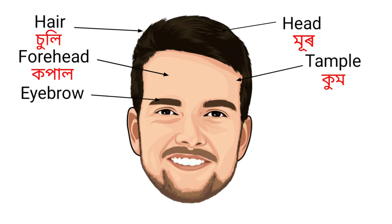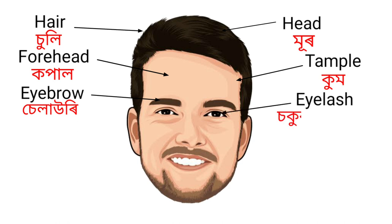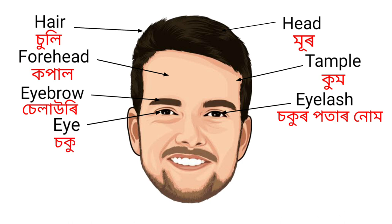Eyebrow — that means Celery. Eyelid — that means Sokur Potarnum. Eye — that means Soku. Eyelet — that means Sokur Pota.